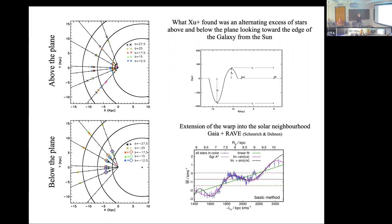This is probably related to work by Schönrich and Dehnen on the extension of the warp into the solar neighborhood. Rather than looking at number counts, they look at vertical velocity as a function of guiding radius or angular momentum about the spin axis of the disk. They find in the mean vertical velocity a linear trend, which they interpret as the extension of the warp toward the solar neighborhood, with a wave-like feature superimposed — some ripple in vertical velocity superimposed on the warp coming into the solar neighborhood.